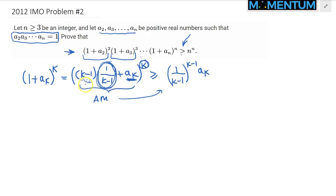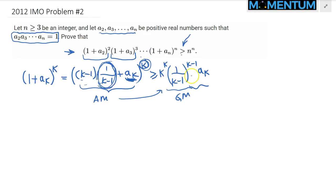There is also a factor of k that needs to be included on the GM side. So in total we have k terms: k minus 1 of the (1/(k-1)) terms and one a_k. Therefore on the GM side I need to make sure I include those terms, and we still have the kth power. So we can rewrite it as k^k divided by (k-1)^(k-1) times a_k.